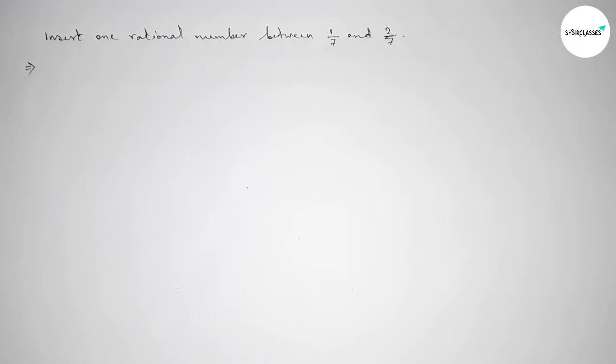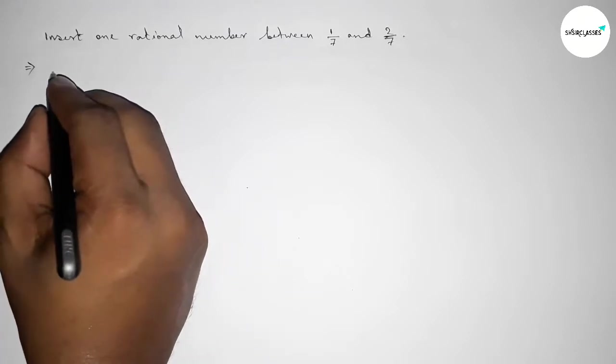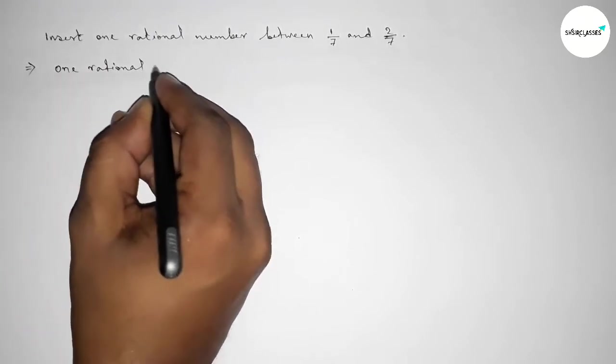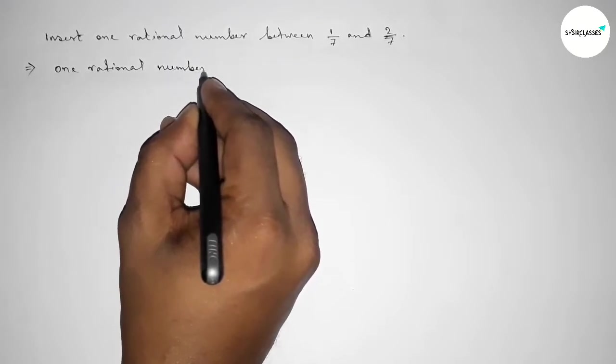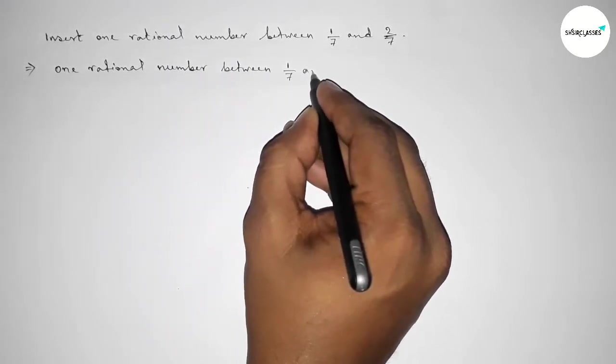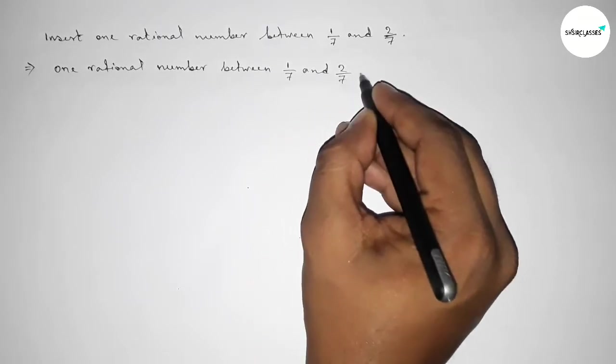We'll use the mean method to find one rational number between 1/7 and 2/7. Finding one rational number between 1/7 and 2/7 by this way.